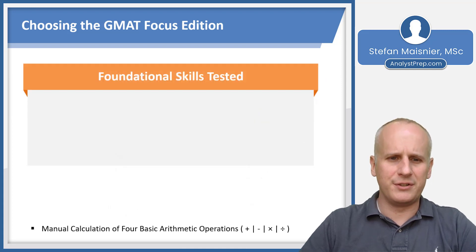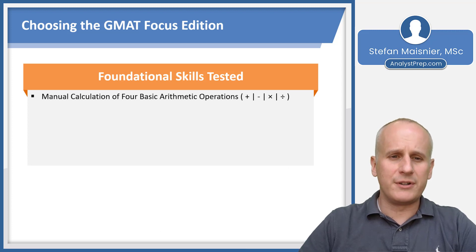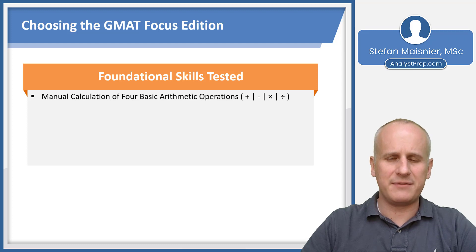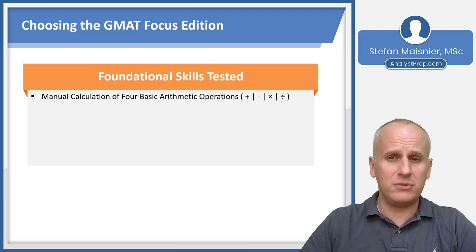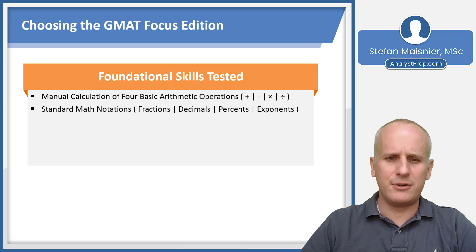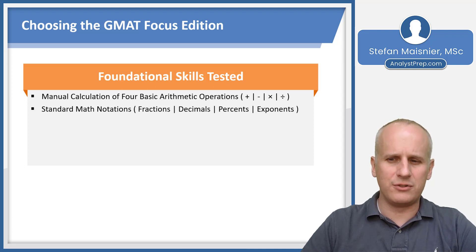So what are those foundational skills that are tested? First, it's manual calculation using the four basic arithmetic operations — addition, subtraction, multiplication, and division — because in the quantitative section there is no calculator. You have to do the math yourself, and you'll benefit scholastically if you develop strong number sense. You'll also become more familiar with different standard math notations, including non-integer notations of fractions, decimals, and percentages, as well as exponent and radical notation.